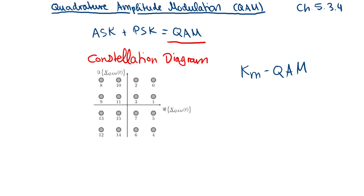From the constellation diagram you can read off values directly. For example, for symbol 3 you can read the length of the red line — that length is the amplitude — and you can also read the phase. If you take another symbol, for example symbol 8, you get another pair of amplitude and phase, so both amplitude and phase change.